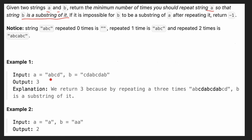For example, in this case we have A = 'ABCD' and we have a B. A is repeated three times — this is the first time, this is the second time, and this is the third time — and after that, B is a substring of it. So we are returning three.